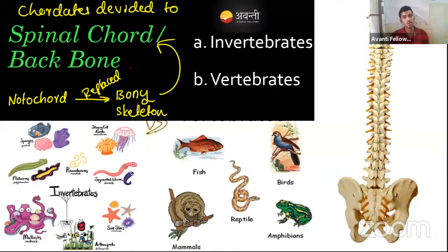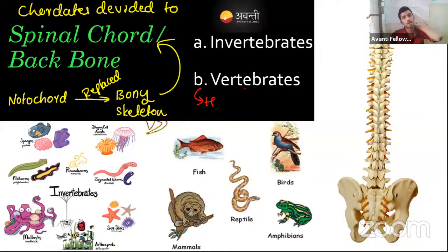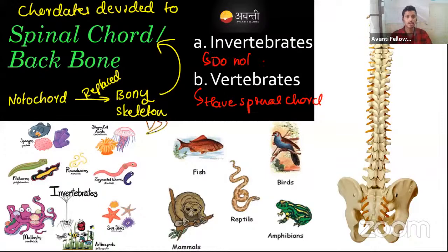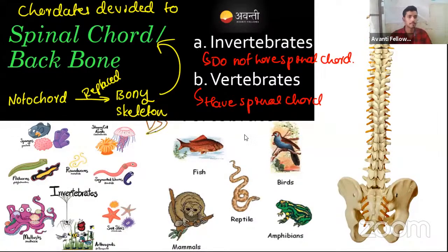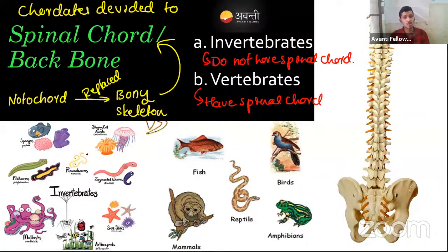Organisms which have the backbone are called vertebrates. 'Vertebra' means spinal cord, so these organisms are called vertebrates. Those that do not have a spinal cord are called invertebrates. We do have a notochord at some embryonic stage — yes, both terms refer to the same initial structure. Examples of invertebrates: sponges, mollusca, arthropods, and others.